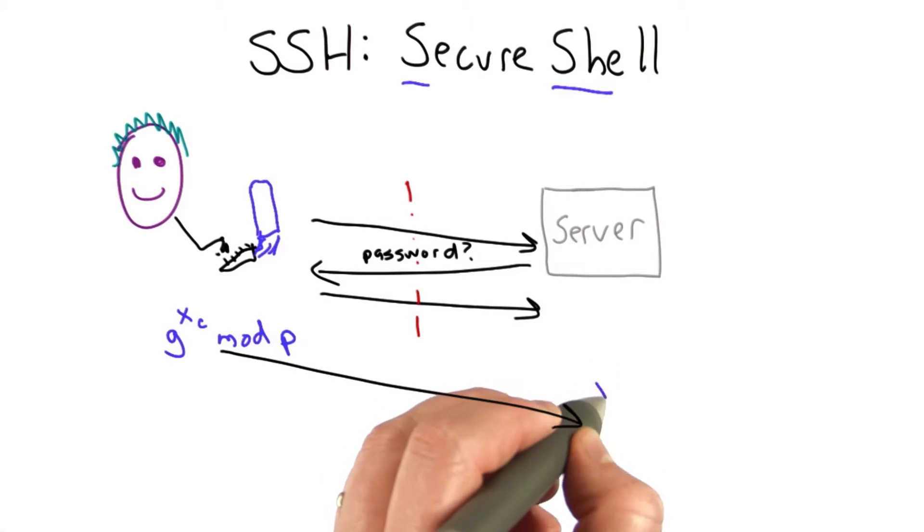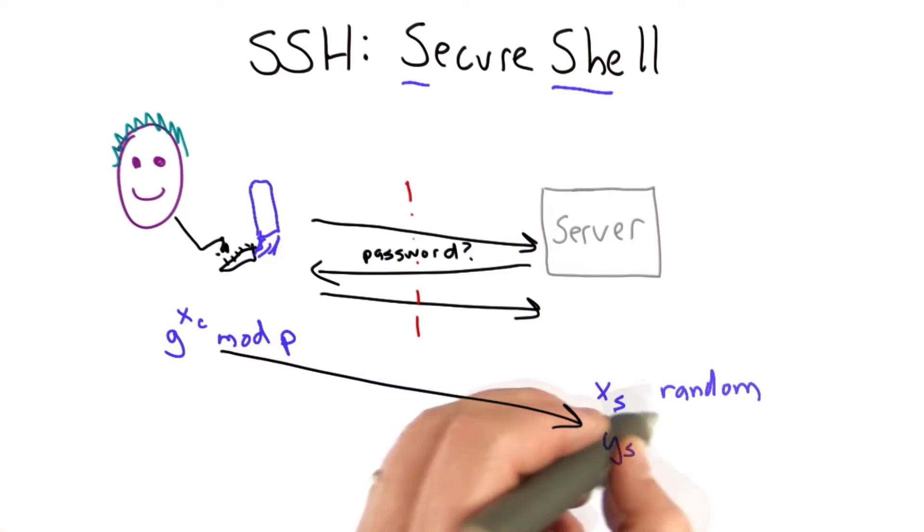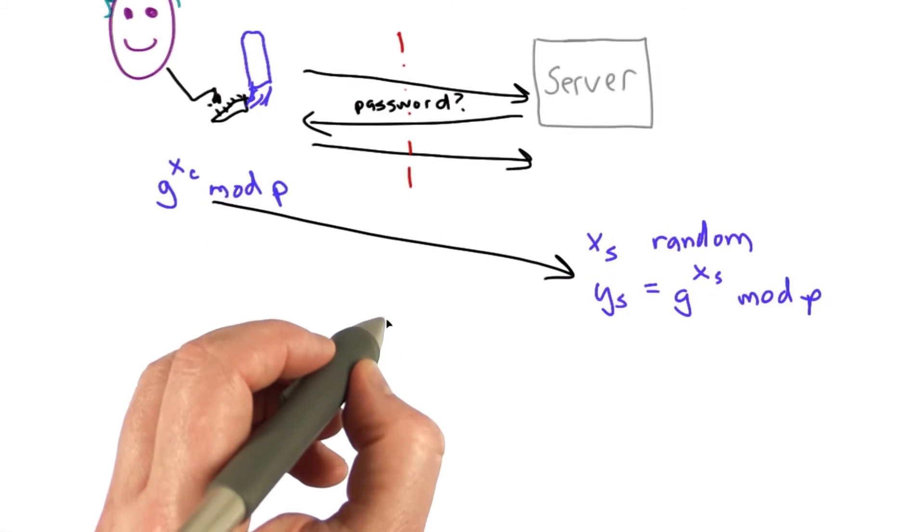The server picks its own large random value, we'll call that xs, and computes ys, which is g raised to that power. So far this is the same as the Diffie-Hellman protocol.